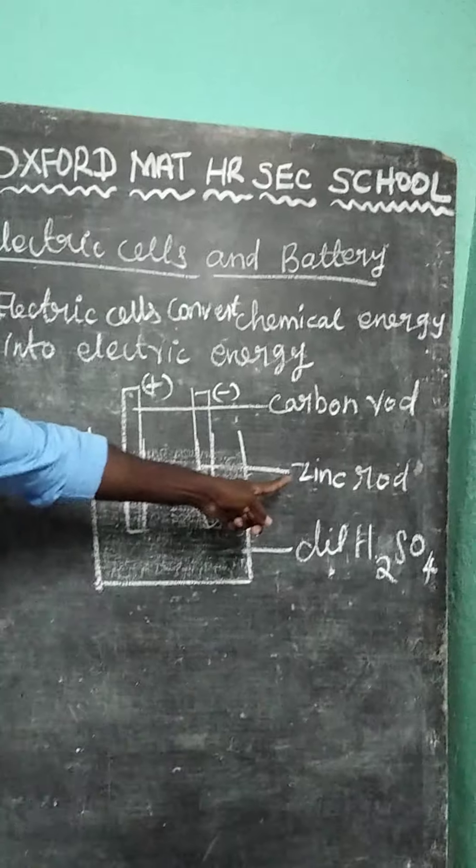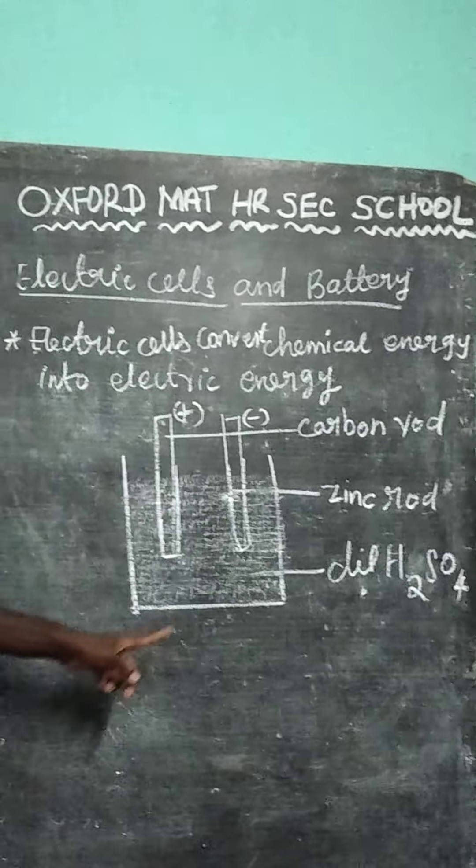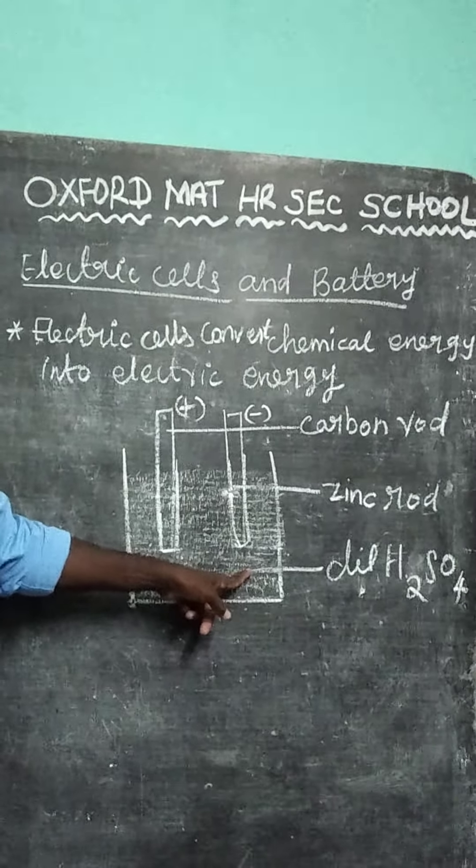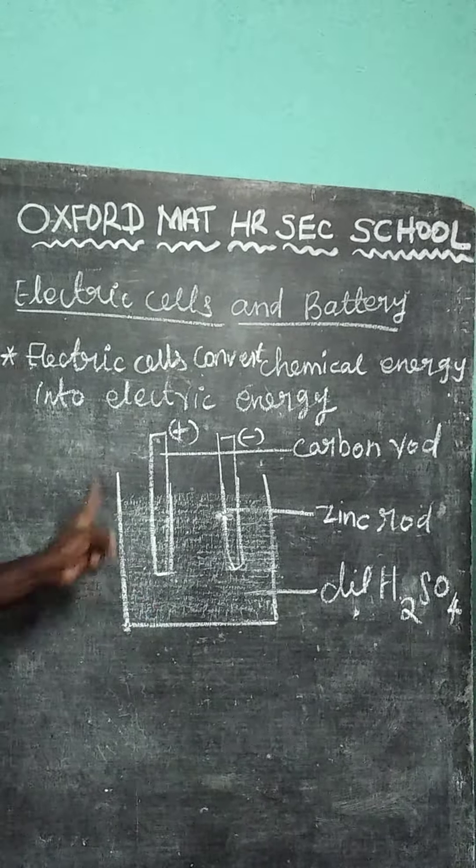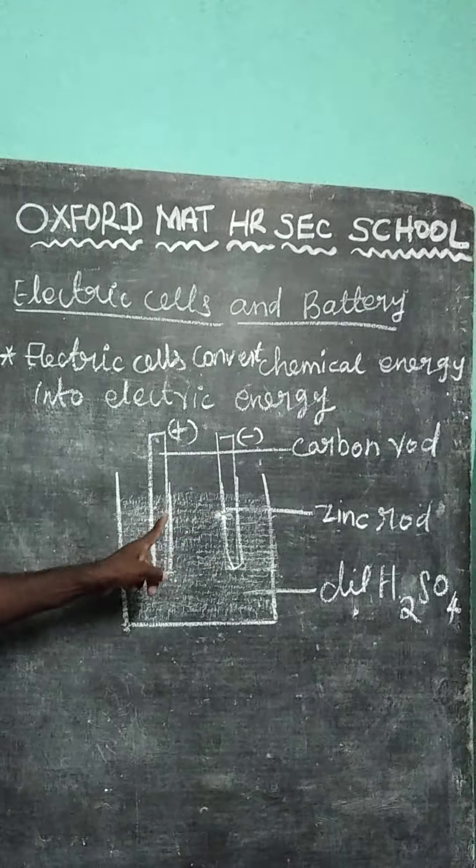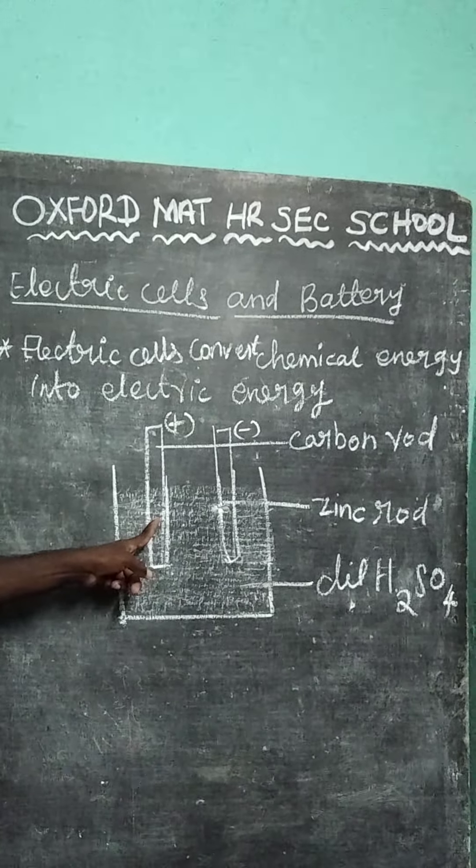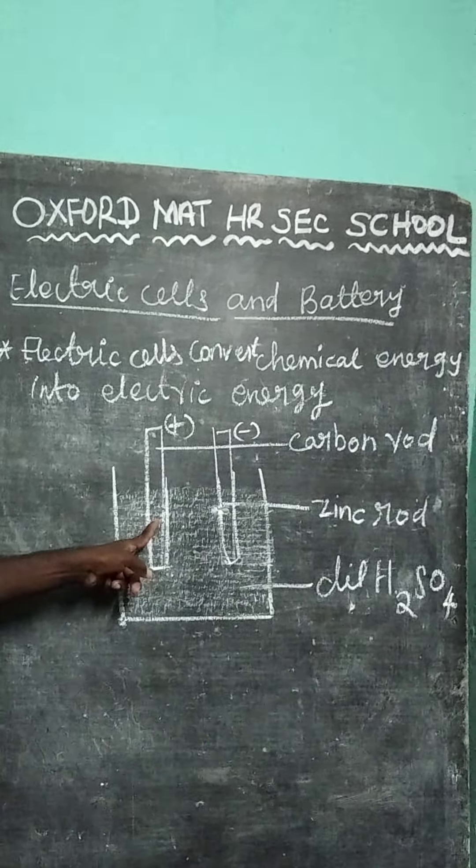The zinc rod negative terminal react with dilute sulfuric acid. Due to oxidation released two electrons. The two electrons move to the anode that is carbon rod. So negative electrons are moving from negative zinc rod to positive copper rod inside the circuit.